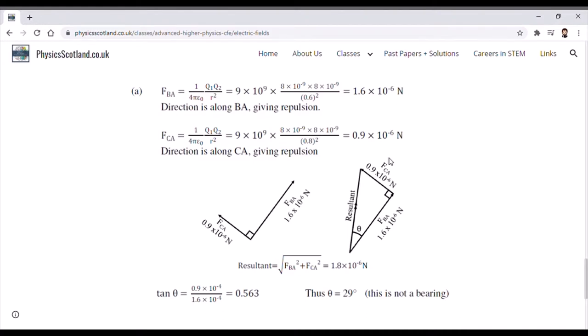As we can see, if we add those in the form of a vector triangle, we get one side being 1.6 times 10 to the minus 6 from the force of B on A and another side of 0.9 times 10 to the minus 6, which is the force of C on A. We get the resultant on the right-hand side of this diagram, which we calculate by doing Pythagoras and trigonometry.